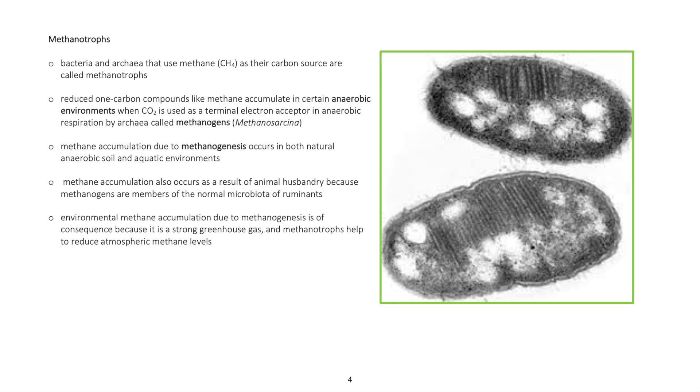Reduced one-carbon compounds like methane accumulate in certain anaerobic environments when carbon dioxide is used as a terminal electron acceptor in anaerobic respiration by archaea called methanogens, Methanosarcina.